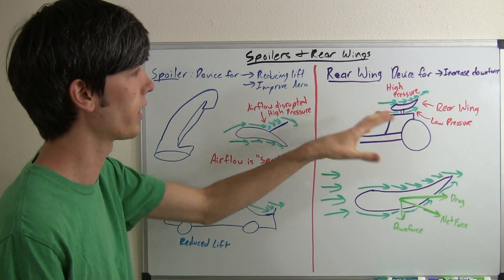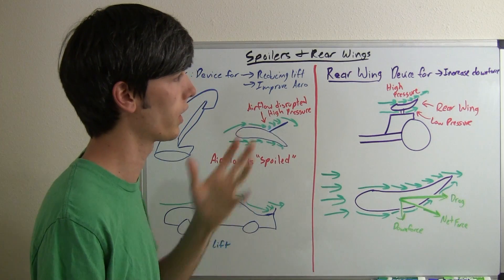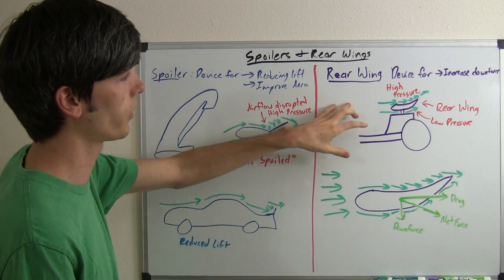But for now basically we're just going to say that this rear wing, the purpose of it is for creating downforce. Now how does it do this?